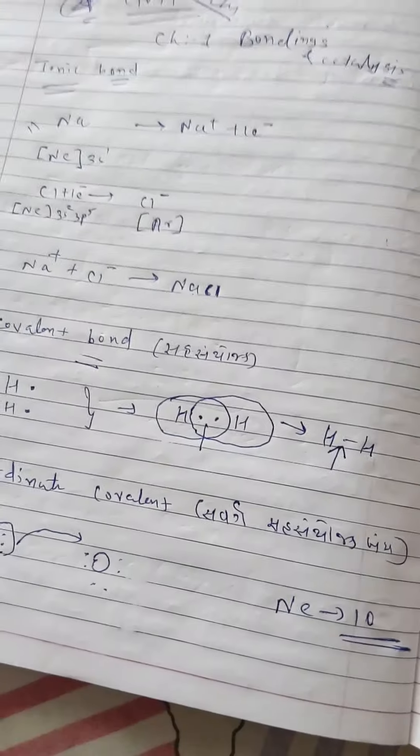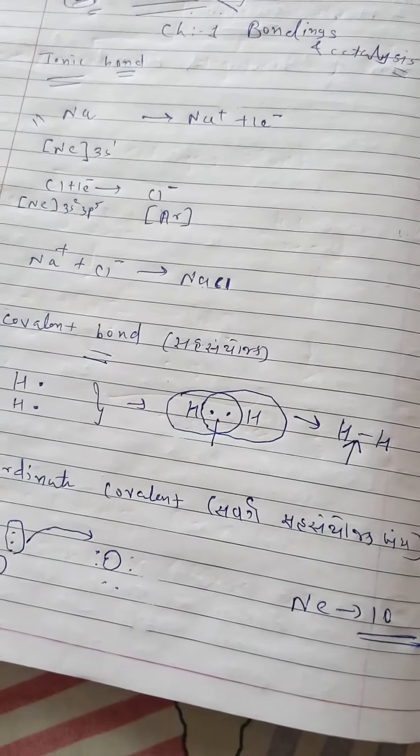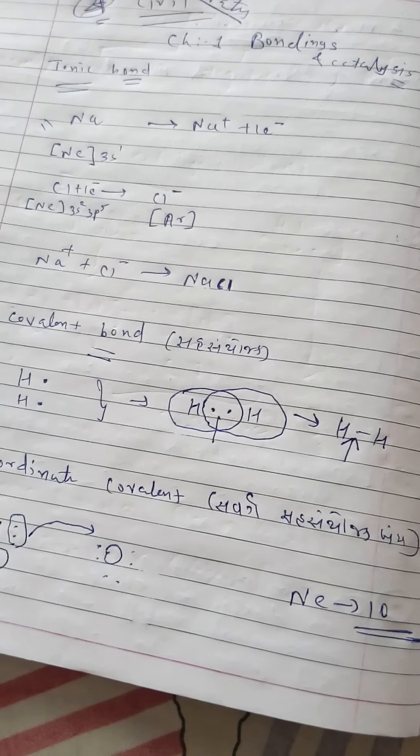If there are two electrons, that means one pair, it's a single bond. If there are four electrons, it's a double bond. If there are six electrons, meaning three pairs, it's a triple bond.